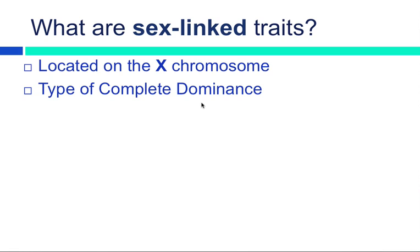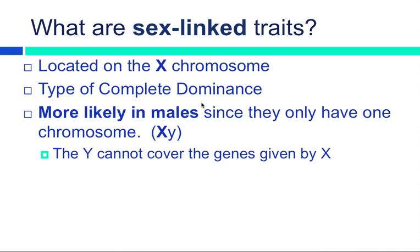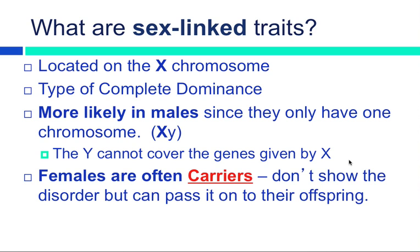So sex-linked traits are located on the X chromosome. It's a type of complete dominance, meaning bigs and littles again and that the one will completely cover the other. But the thing is, sex-linked traits are more likely to appear in males because they only have one X chromosome. The sex-linked traits are located on the X. The Y chromosome does not carry any allele to cover up whatever the X chromosome gives you. So the Y cannot cover the genes given by the X. Females are often called carriers because since they do have two Xs, one of the Xs may dominate and cover up the recessive trait, including color blindness.